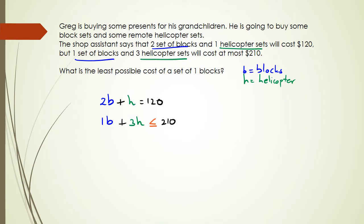Because it says 'at most,' that means it's written as less than or equal to. Now we want to figure out what's the least possible cost of one set of blocks. In the first equation we need to rearrange it — we won't eliminate H; instead we write H in terms of B, which gives us H equals 120 minus 2B.